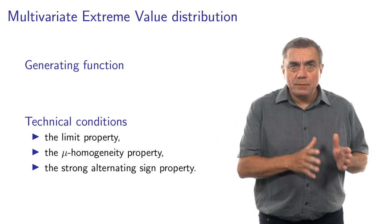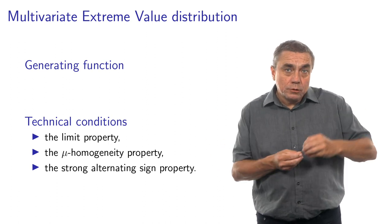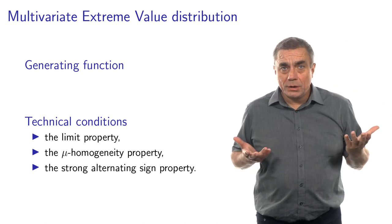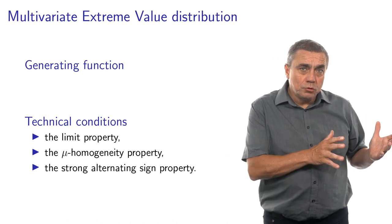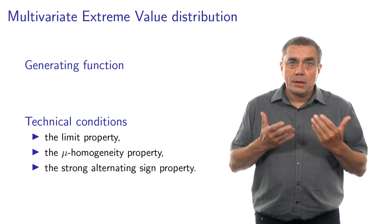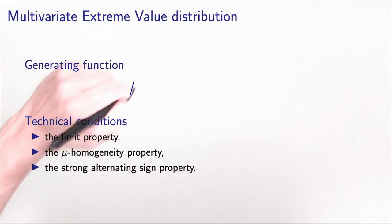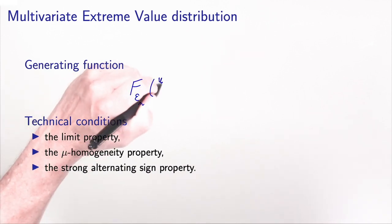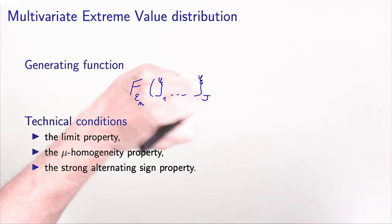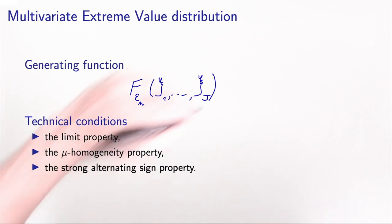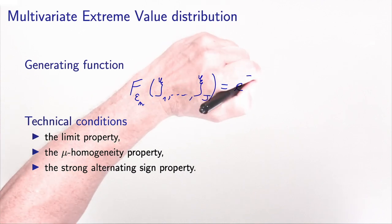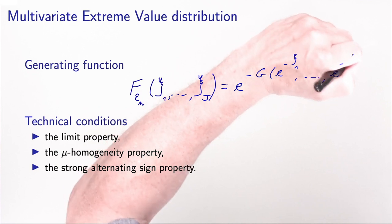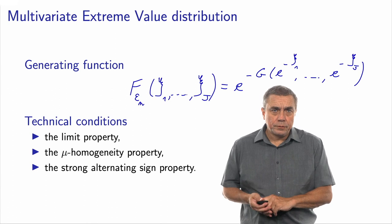we first need to define what is a MEV distribution. This is actually the distribution of a random vector. We put all the error terms of all the alternatives in the same random vector in order to be able to capture correlation. What we need to do is to define the distribution from its CDF, the cumulative distribution function. The CDF of the random vector consisting of the error terms for individual n is a function of J parameters corresponding to the J alternatives, and this is equal to e to the minus G of e to the minus xi_j. So this is the definition of the MEV distribution.